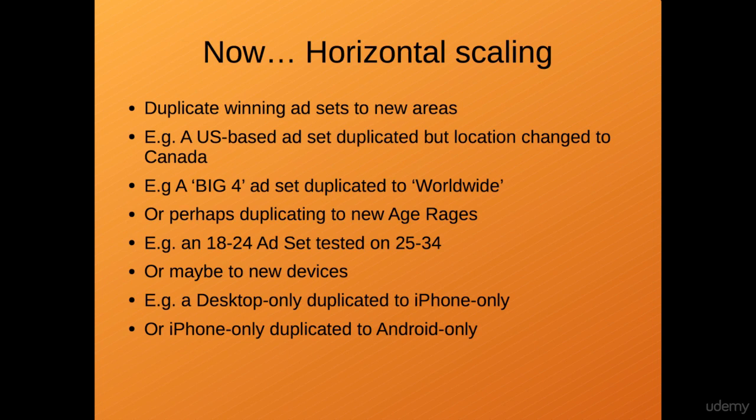Perhaps you're duplicating to new age ranges. You have a profitable ad set hitting the 18 to 24 age range, so you duplicate it and in the new duplicate's ad set settings you change the age range to 25 to 34 and test this new age range. Obviously you do keep the original running because it's profitable.